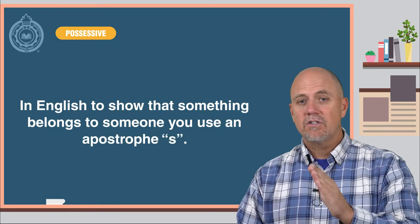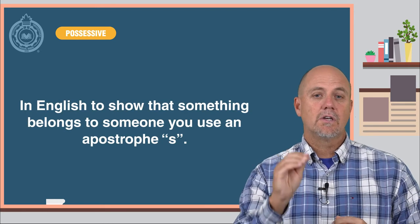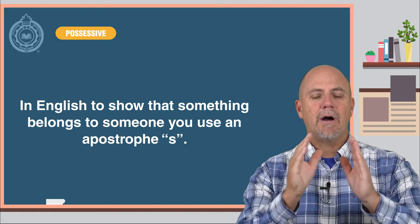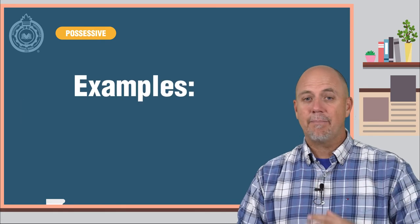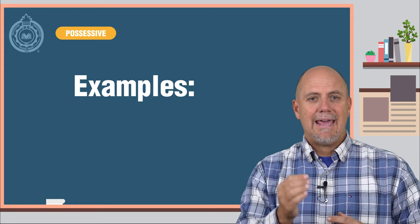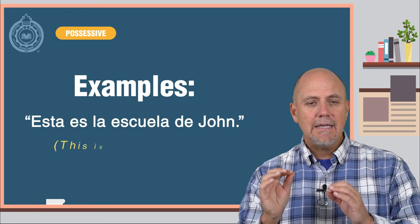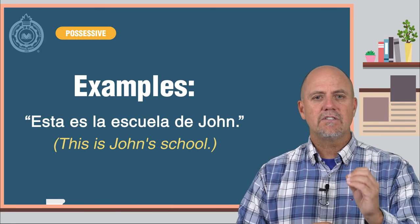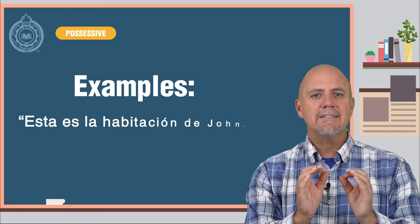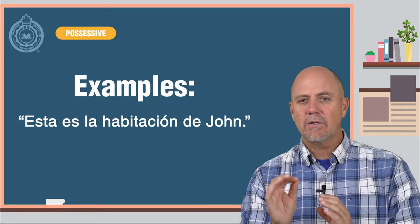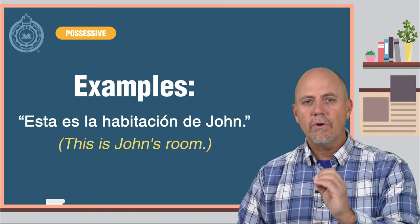In English, to show that something belongs to someone, you use an apostrophe s. Here are some examples. Esta es la escuela de John — this is John's school. Esta es la habitación de John — this is John's room.